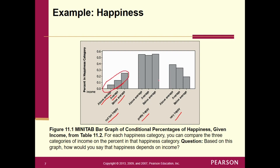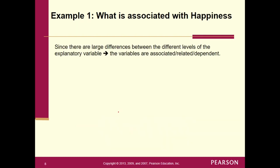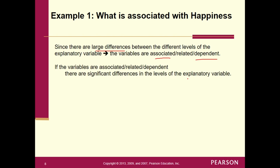Wouldn't you say this is indicating a pretty big difference between the families of different incomes? And as soon as we start seeing these differences, that's telling us that somehow family income is related to happiness. So since there are large differences between the different levels of the explanatory variable, that leads us to conclude the variables are associated, they're related, they are dependent. Large differences lead to the conclusion that they are dependent and associated. If the variables are associated, there are significant differences across the levels of the explanatory variable.